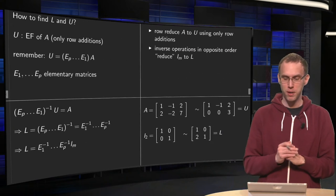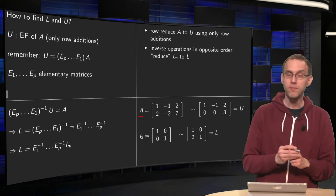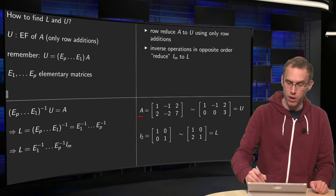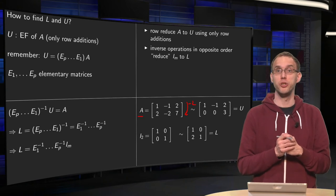That is in a small example. We start with our matrix A over here. Now, we reduce A to its echelon form. Only one step is needed. You add minus 2 times the first row to the second one, and then you have your echelon matrix U.